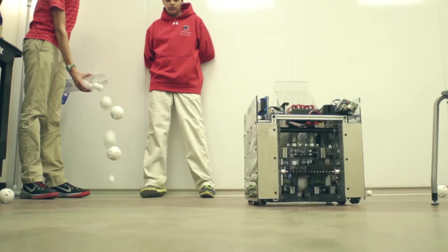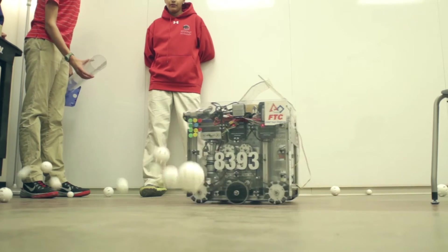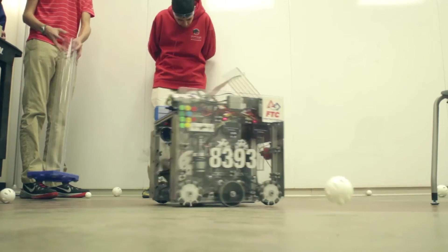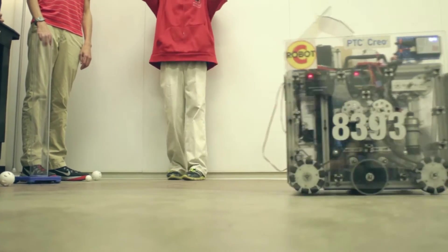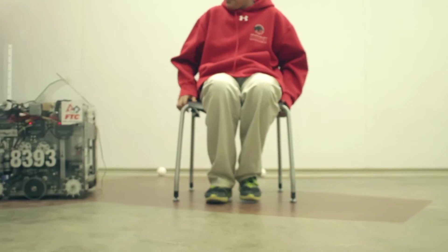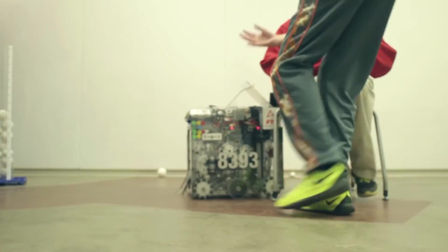This year, the game involved an enormous number of wiffle balls of different sizes. You had to release them all over the field, collect them, put them into rolling goals, move the rolling goals around to different places for scoring positions, all while playing both offense and defense. So it was critical to develop a robot that had a number of different capabilities.